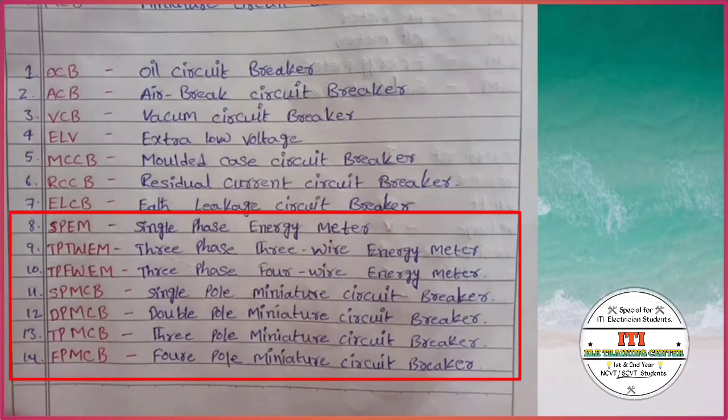SP EM: single phase energy meter. TP TW EM: three phase three wire energy meter. TP FW EM: three phase four wire energy meter. SP MCB: single pole miniature circuit breaker.